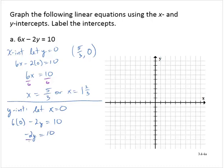Divide through by negative 2, and y equals negative 5. And so we have the ordered pair 0, negative 5.